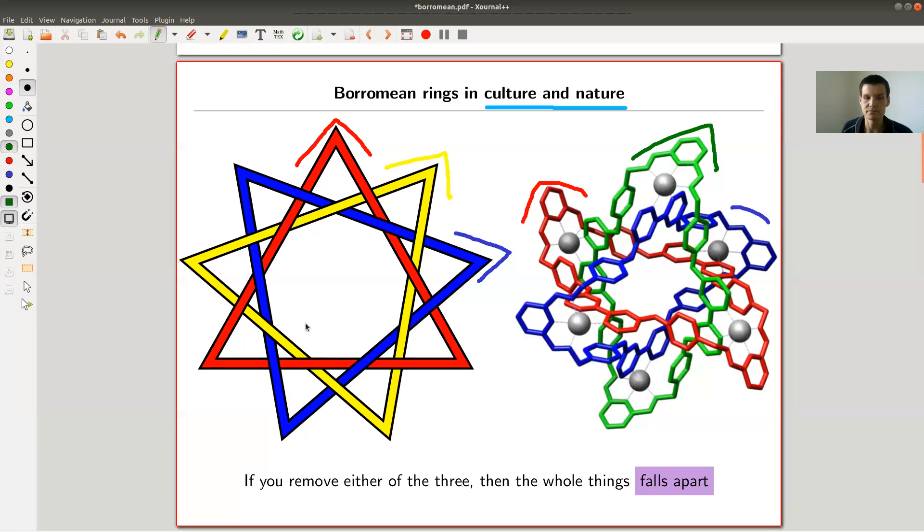They are linked in a way such that whenever I remove one of them, no matter which one, the other two get unlinked. Whenever I remove the blue one, the other two get unlinked. Whenever I remove the red one, the other two get unlinked. Whenever I remove the yellow one, same thing. The others get unlinked, you can pull them apart.